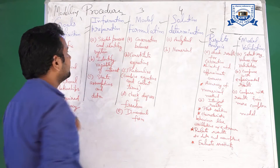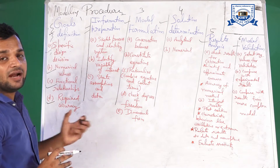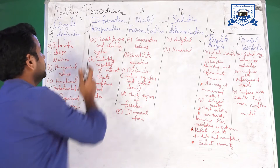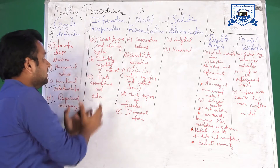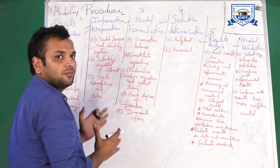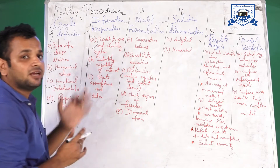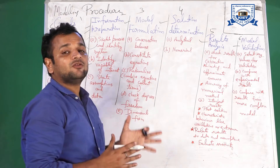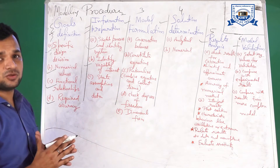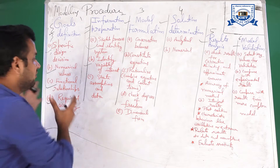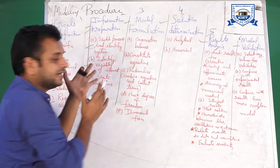The second step is information preparation. In information preparation, you sketch the process and identify the system. If you are defining any modeling process, you first need to identify your system. Here you have done the literature survey, and your main task in information preparation is to determine the basic need of your system.